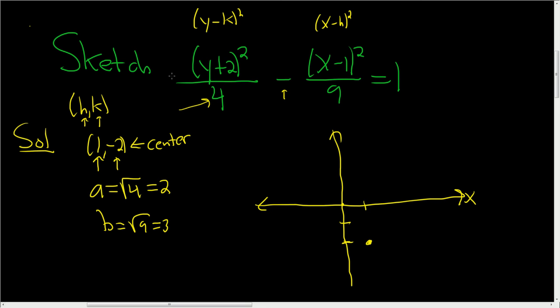Then since the y comes first, this guy opens up and down. If the x had come over here, if there was an x here instead, then it would open left and right. So the center was 1 negative 2. It's there.